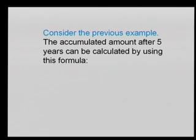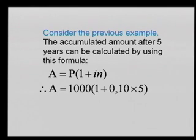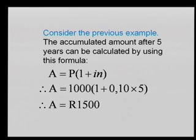P is the original amount — 1,000 Rand. A is the accumulated amount — 1,500 Rand. The interest i is 10% divided by 100, which is 0.10. And N is the time period. If we substitute these values into the formula, A = 1,000 × (1 + 0.10 × 5), the amount comes out as 1,500. Isn't that amazing? Just a few lines rather than all those step-by-step calculations.